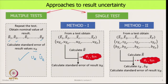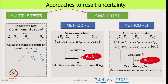Then we looked at the single test method and saw that we have two approaches: we could either use the Taylor Series Method or the Monte Carlo method. The Monte Carlo method is a discrete probabilistic model with a very powerful simulation tool, but we will leave it for an advanced course. In this course, our attention will be on uncertainty analysis using the Taylor Series Method.